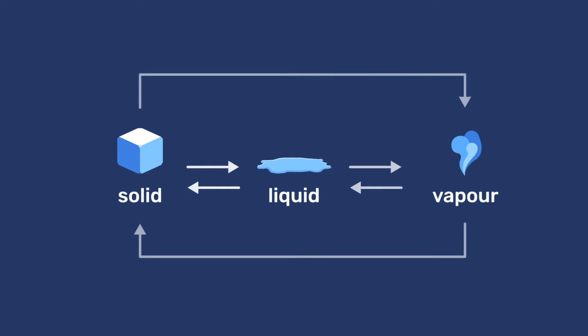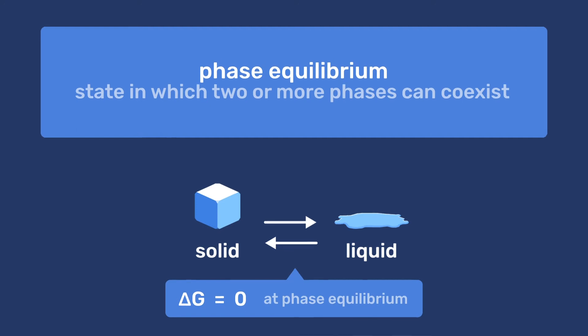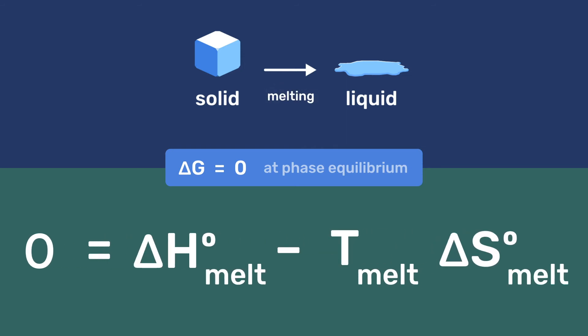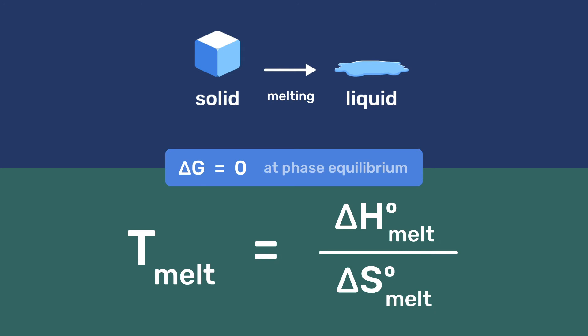Let us move to considering phase equilibrium. This requires ΔG to be equal to zero. Using the equation ΔG equals ΔH minus TΔS, we can define the melting temperature as T melt equals ΔH melt divided by ΔS melt.